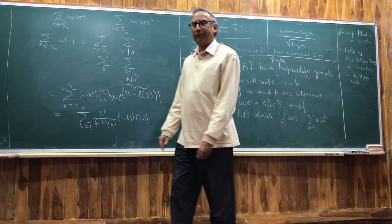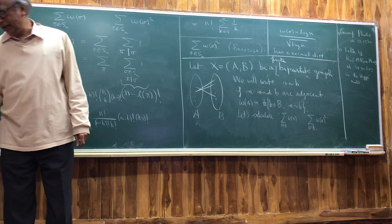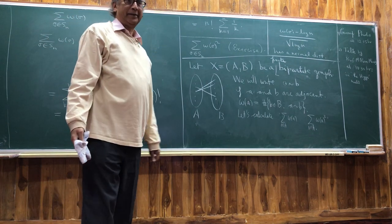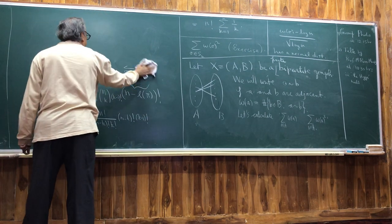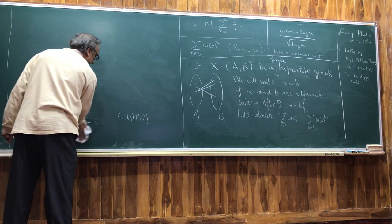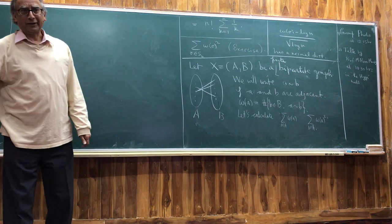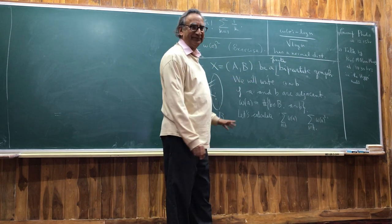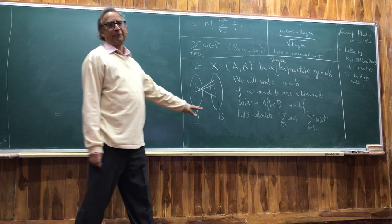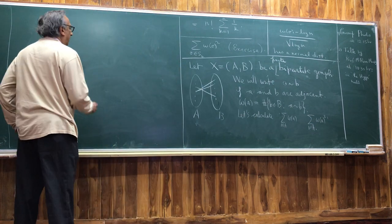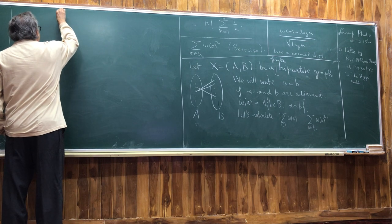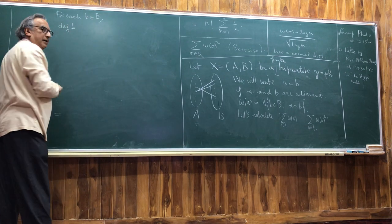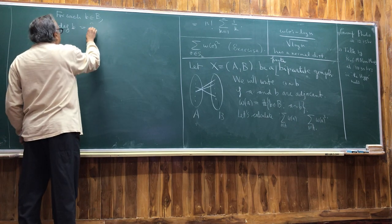Of course you know what these are, but I'm going to keep saying this because it's so simple it is often overlooked. Things are so simple we just ignore them. We're summing only over the vertices in A. Of course you have the handshake theorem in graph theory — the sum of degrees here equals the sum of degrees there — but don't go there. For each b in B, the degree of b is the number of vertices in A adjacent to b.